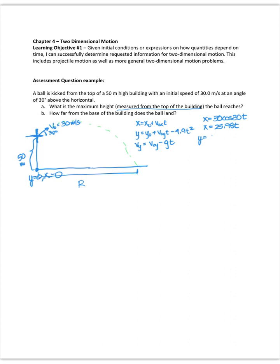Y is equal to 50 plus 30 sine of 30, that's the y component of the initial velocity times t, minus 4.9 t squared. This is y equals 50 plus 15 t minus 4.9 t squared. And my y velocity is going to be equal to 15 minus 9.8 t.